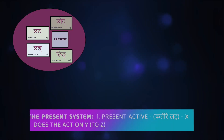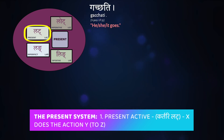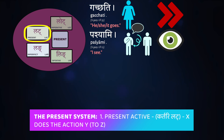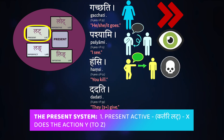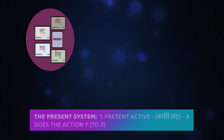We started with the basic present active conjugation known as the lat. These are verbs like gacchati — he, she, or it goes; bashyami — I see; hansi — you kill; dadati — they give, three or more. This is the present active tense, the kartari lat.